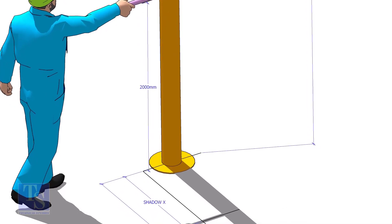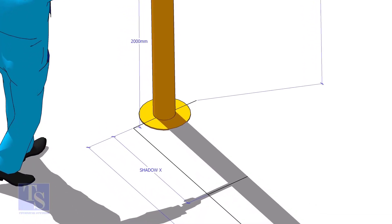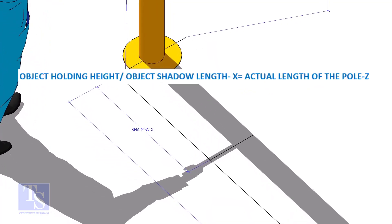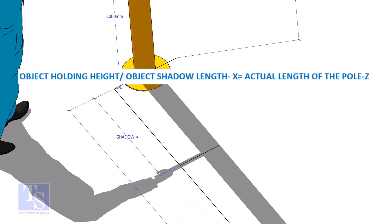Let's apply a simple calculation. Divide the object holding height by the object shadow and multiply by the shadow length of the pole.